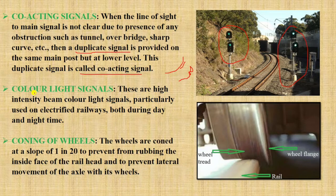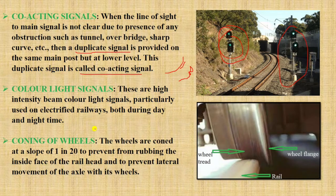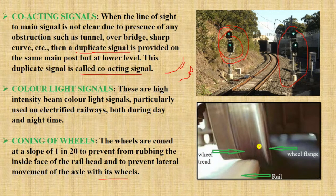Next, color light signals. These are high-intensity beam color light signals, particularly used in electrified railways both during day and night. Next, coning of wheels. The wheels are coned at a slope of 1 in 20 to prevent rubbing on the inside face of the rail head and to prevent lateral movement of the axle with its wheels. This slope of 1 in 20 prevents wear and lateral movement.